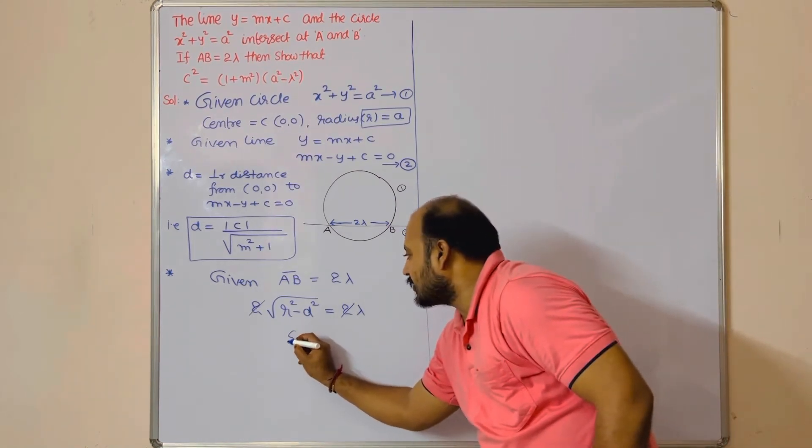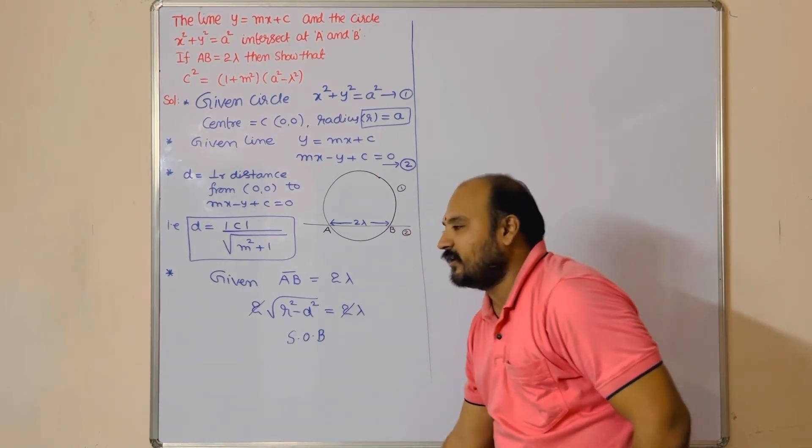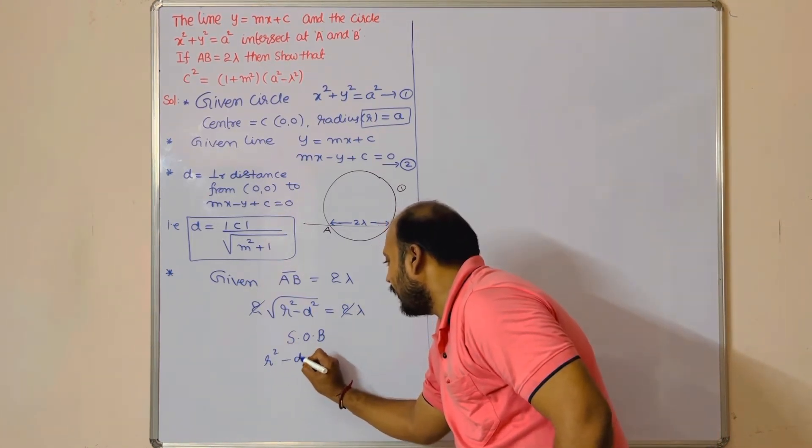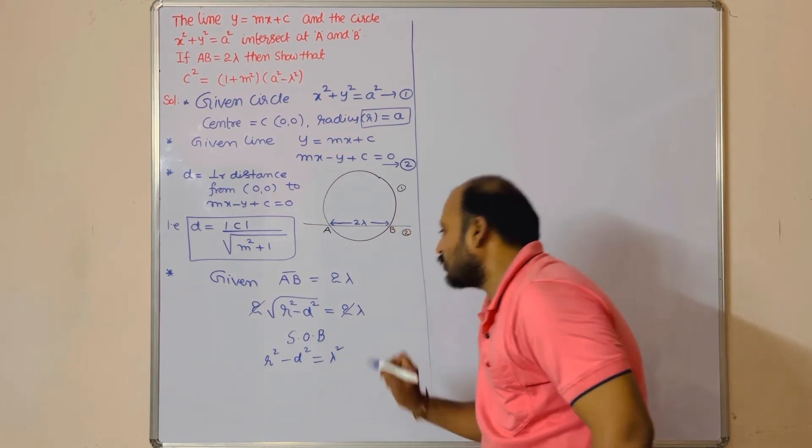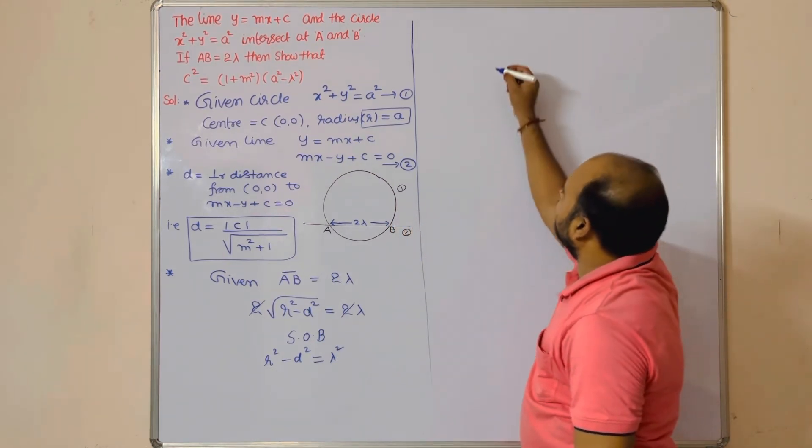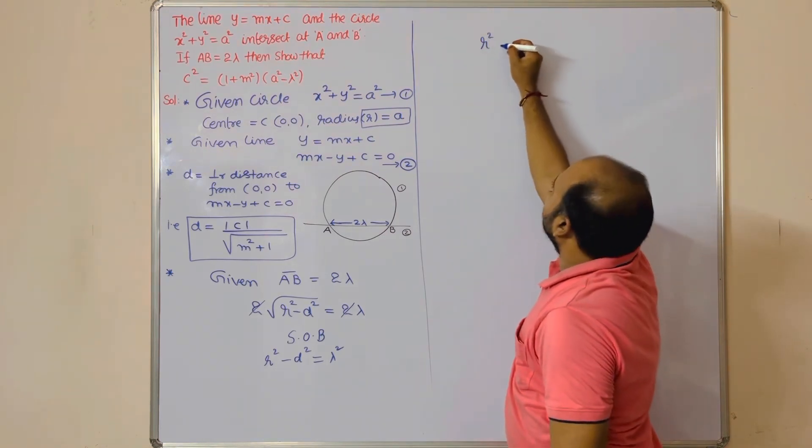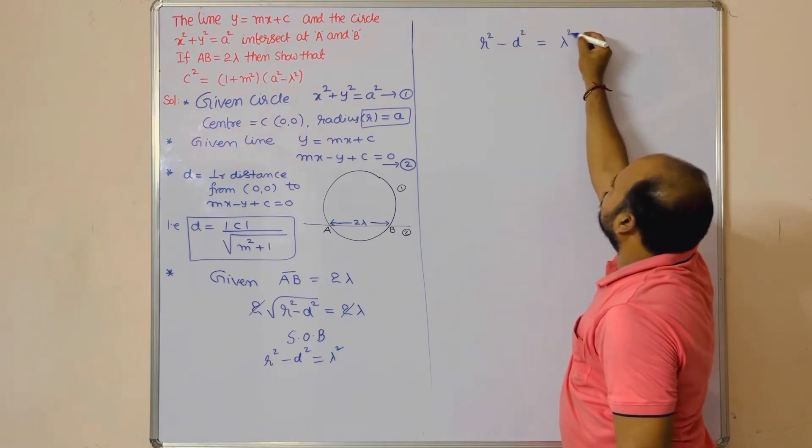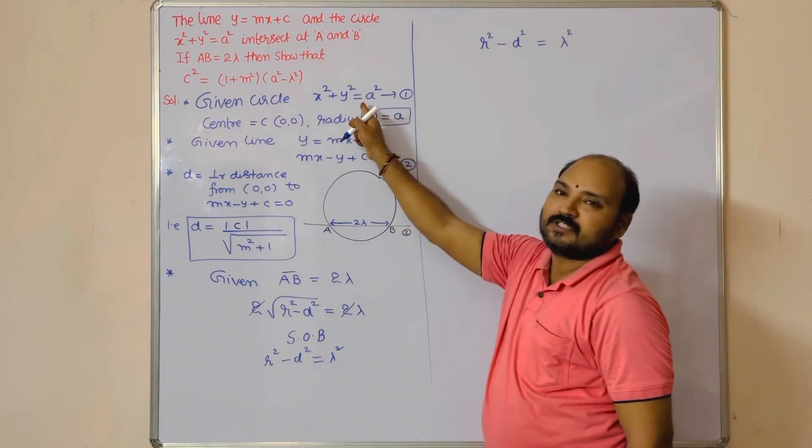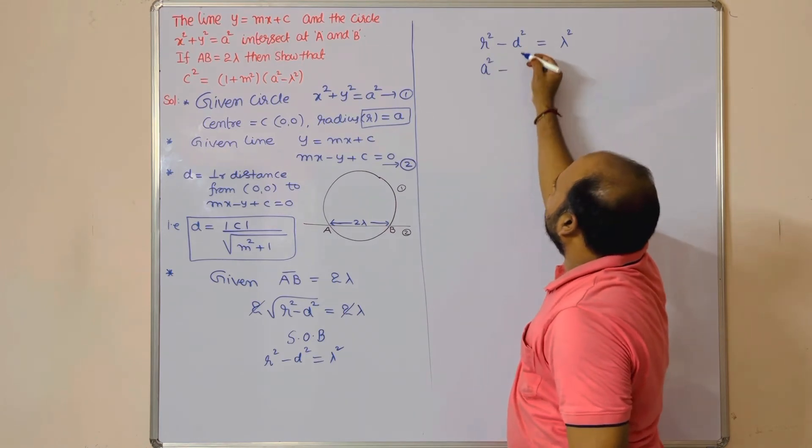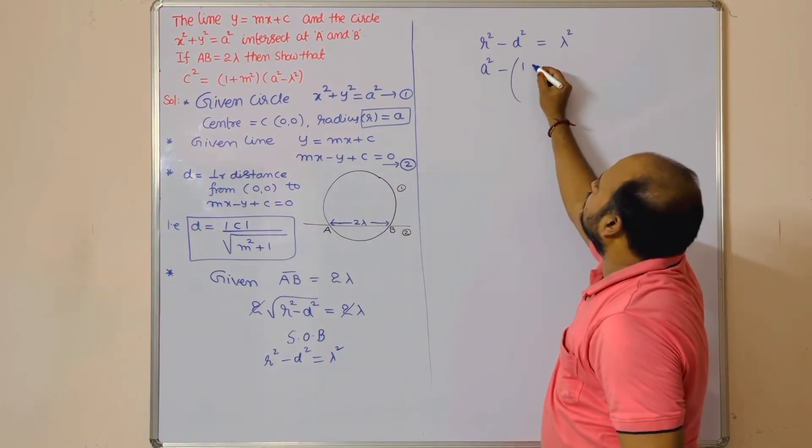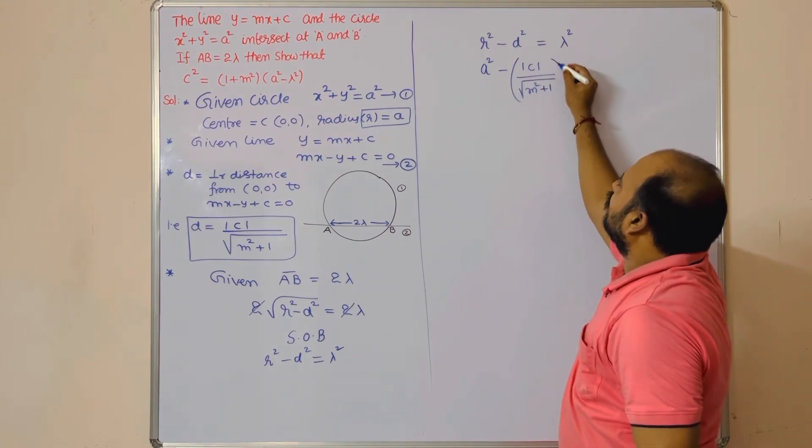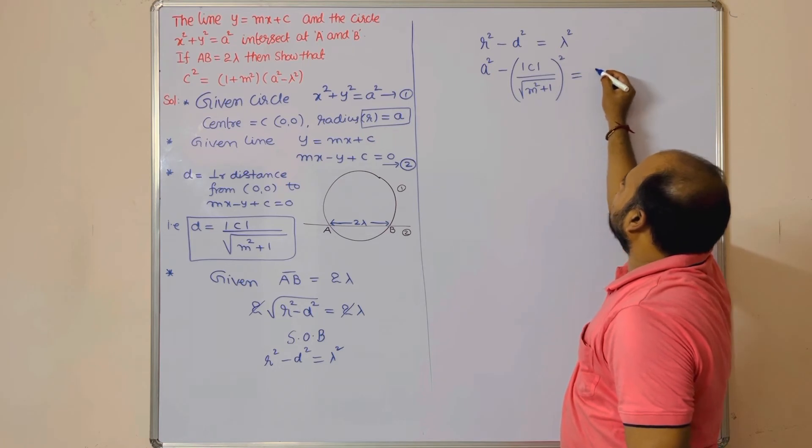Squaring on both sides, you will get r² - d² = λ². That's what we're writing: r² - d² = λ². r value is how much? a, so a² - d value |c|/√(m² + 1), whole squared = λ².